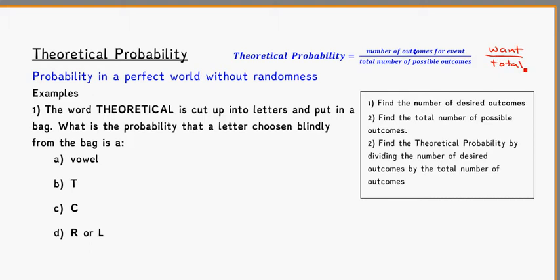Theoretical probability, again, is when we're looking at what should happen if everything goes perfectly. So if we want to find out a theoretical probability, you need to find the number of desired outcomes, that's what you want and what goes on top. And then find the total number of possible outcomes that will go on the bottom of the fraction.